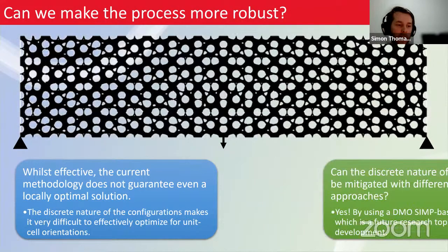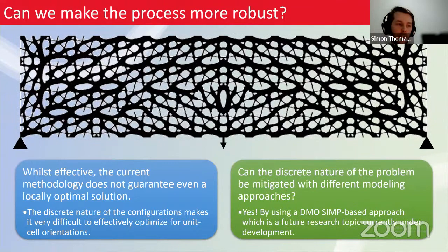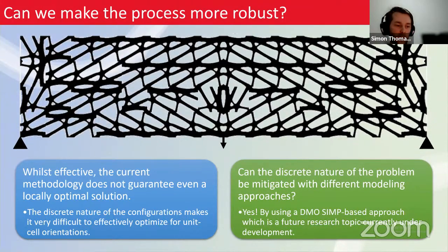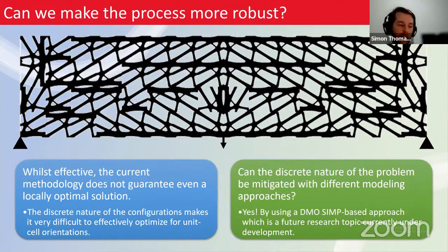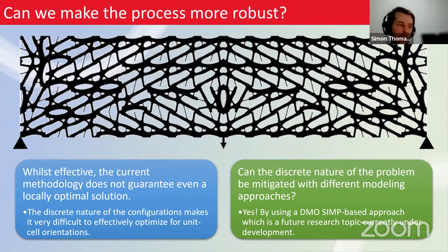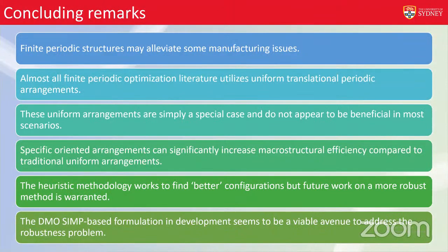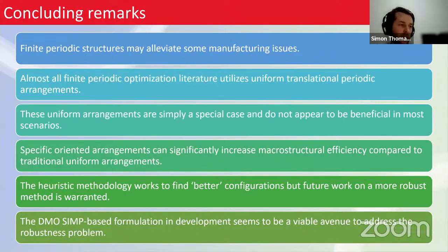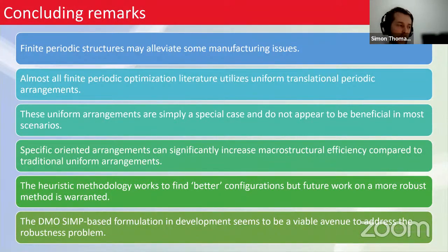Can the discrete nature of this problem — where unit cells must exist in a specific orientation state — be overcome? Yes, by using a DMO-based SIMP approach, which is a future research topic we're now investigating. To conclude: finite periodic structures can alleviate manufacturing issues, but almost all periodic optimization literature utilizes uniform translational periodic arrangements, which are simply a special case from the largest set of potential permutations.